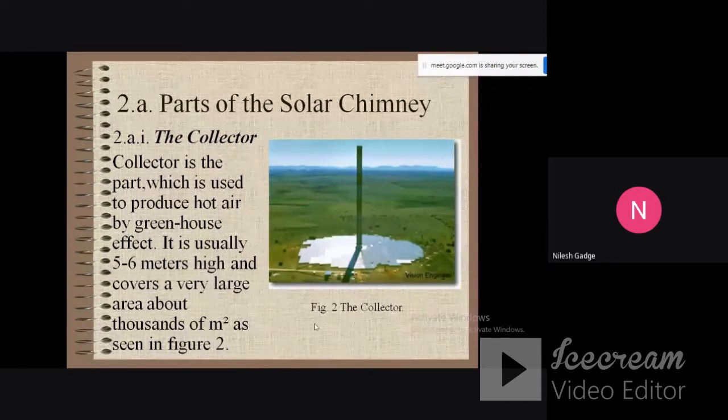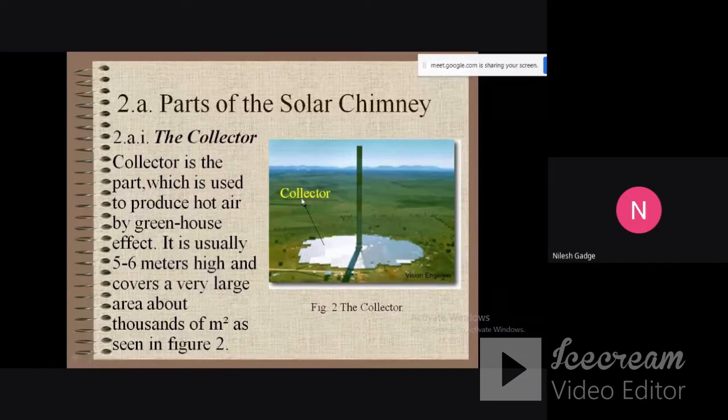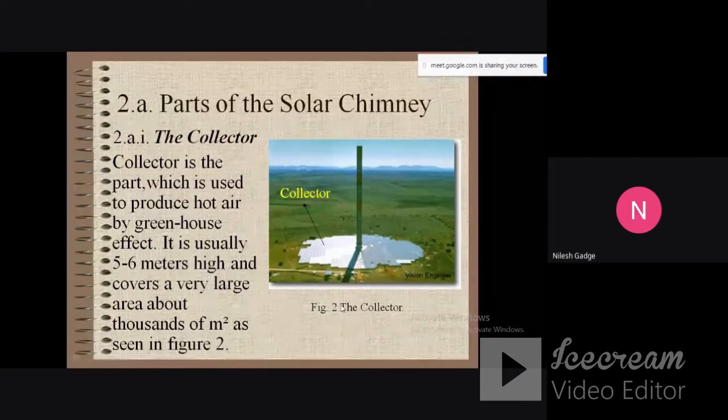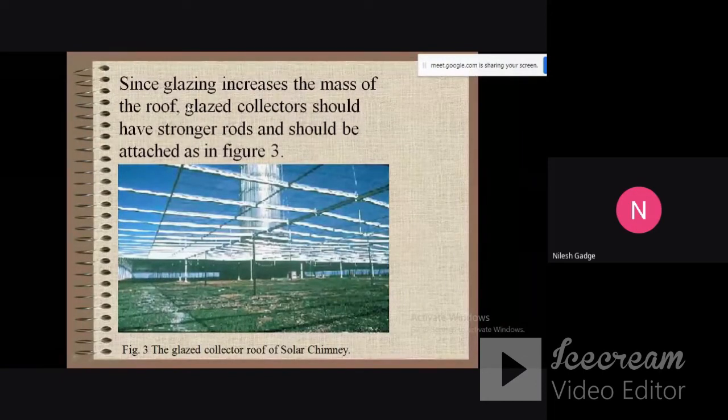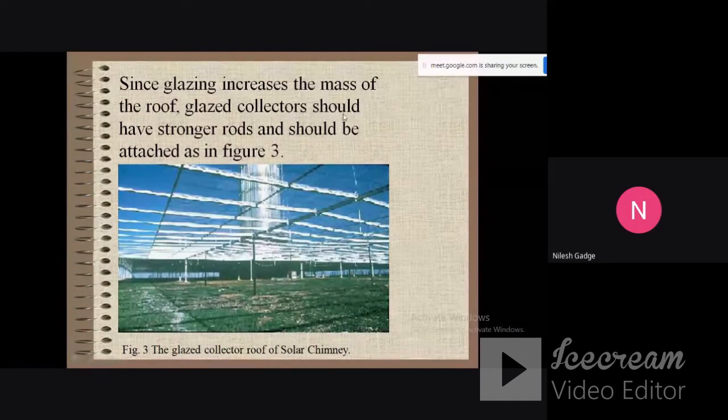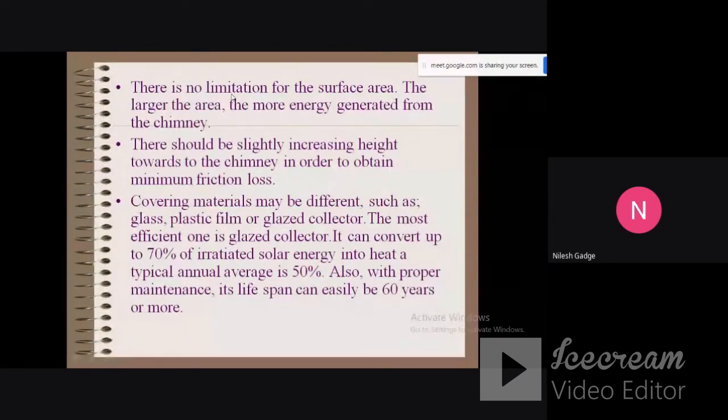The area required is more for the collection of solar energy or solar radiations. Since glazing increases the mass of the roof, glazed solar collectors should have stronger rods and should be attached as in the figure. This is the glazed collector's roof of the solar system. It covers a large area, thousands of square meters. There is no limitation for the surface area - the larger the area, the more energy generated from the chimney. There should be slightly increasing height towards the chimney in order to obtain minimum friction.